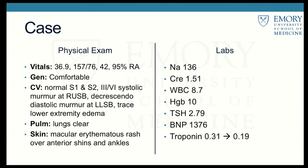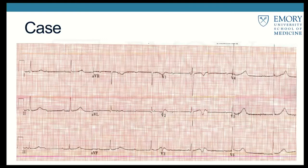His cardiovascular exam was notable for a 3 out of 6 systolic murmur and a decrescendo diastolic murmur with some trace lower extremity edema and the rash shown before. His labs were notable for a creatinine of 1.5 with an unknown baseline, a BNP of about 1,400, and a troponin of 0.31 that downtrended.